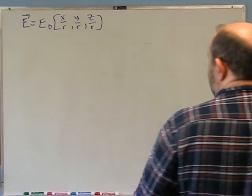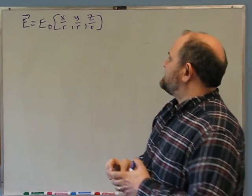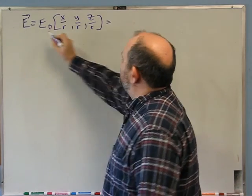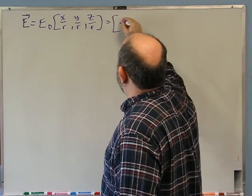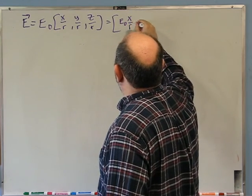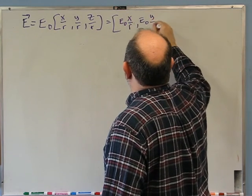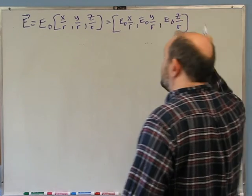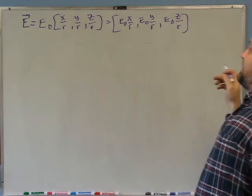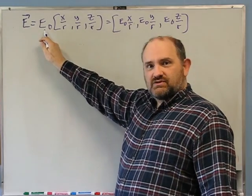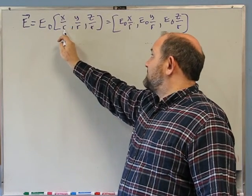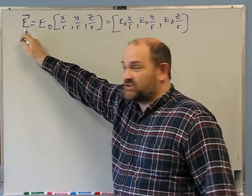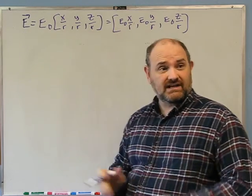In the third problem I'll give you a different electric field and tell you to sketch that. This is E0 times the vector (x/R, y/R, z/R). Remember, when you multiply a vector by a scalar, it's the same as saying it's E0·x/R, E0·y/R, E0·z/R. E0 is going to have units of newtons per coulomb because X is in meters and R is in meters, making x/R unitless — so E0 must be in newtons per coulomb.